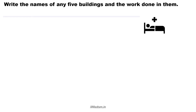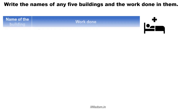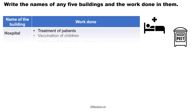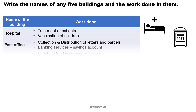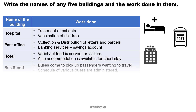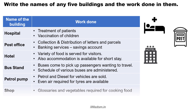Write the names of any five buildings and the work done in them. Post office — in the post office, we see people working to collect and distribute letters and parcels; it also provides banking services like savings accounts. Hotel — a hotel serves food and also provides accommodation for temporary stay by providing rooms.